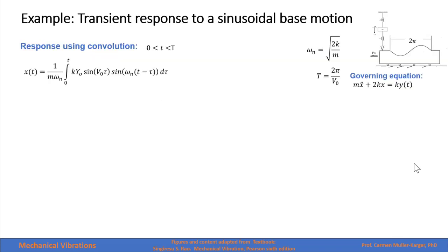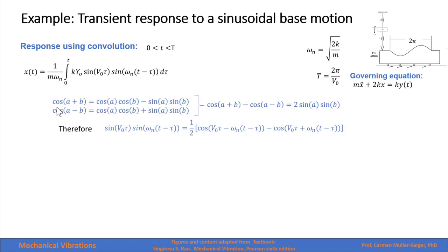Let's solve the convolution integral for time less than the period. We integrate the sinusoidal forcing function times the sine of ωₙ(t − τ), which comes from the impulse response in the convolution integral. To integrate the product of two sine functions, we use the trigonometric identities for cosine(a + b) and cosine(a − b). Expanding and subtracting those identities gives us: 2·sin(a)·sin(b) equals cosine(a − b) minus cosine(a + b).